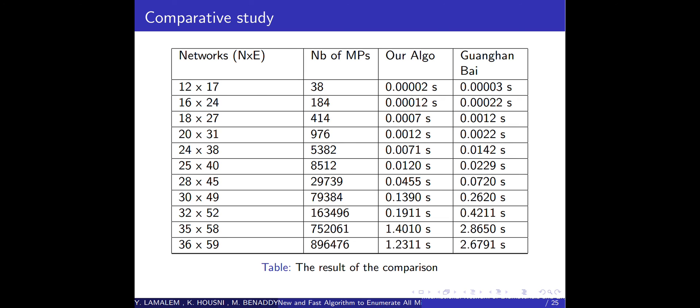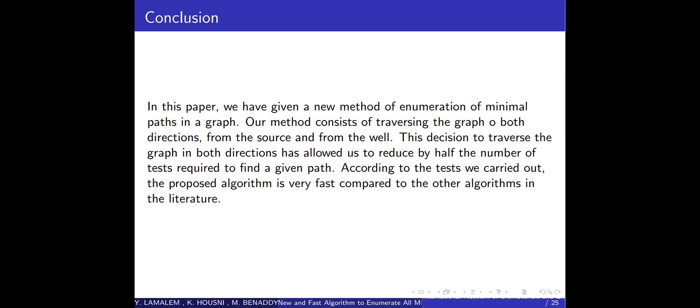As a conclusion, in this paper we have given a new method of enumeration of minimal paths in a graph. Our method consists of traversing the graph in both directions from the source and from the sink. This decision to traverse the graph in both directions has allowed us to reduce by half the number of tests required to find a given path. According to tests we carried out, the proposed algorithm is very fast compared to other algorithms in the literature. Thank you.